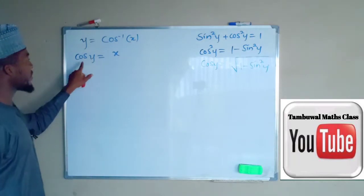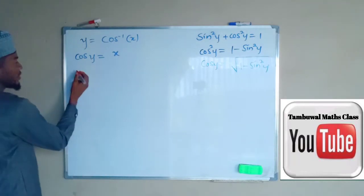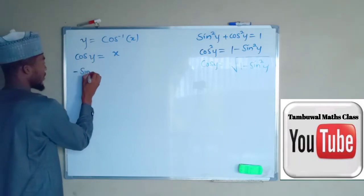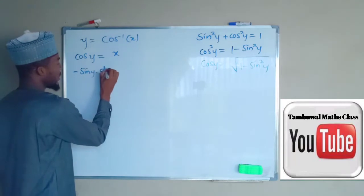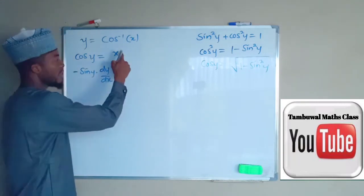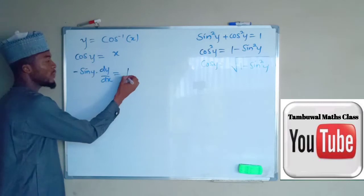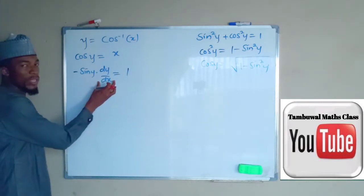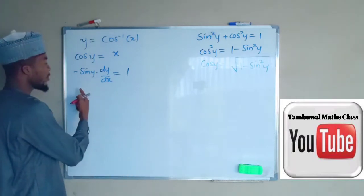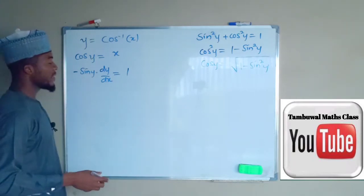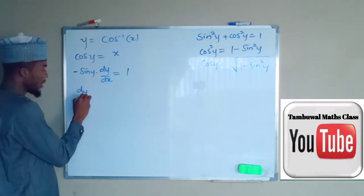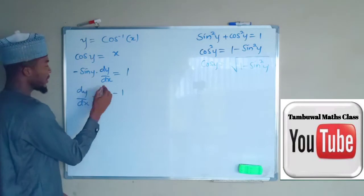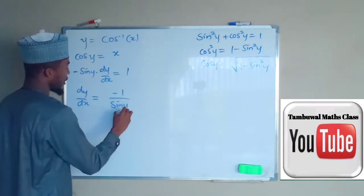By differentiating both sides with respect to x, on the left hand side if you differentiate cos y you obtain negative sine y times dy/dx, and on the right hand side differentiating x gives 1. We are looking for dy/dx, so we divide both sides by negative sine y, giving dy/dx = −1 / sin y.